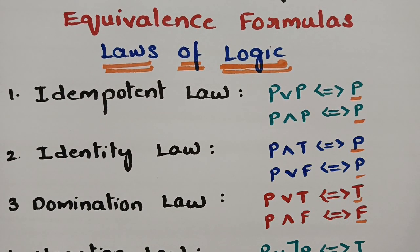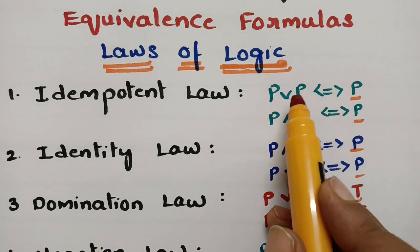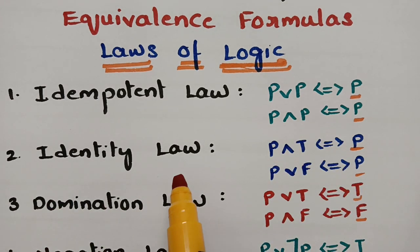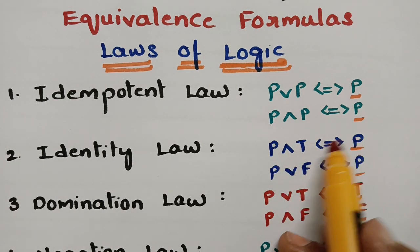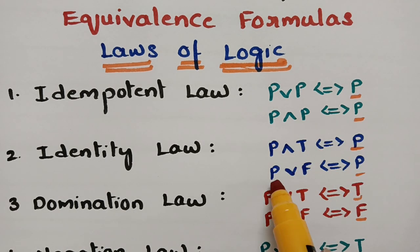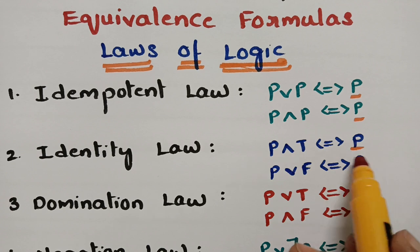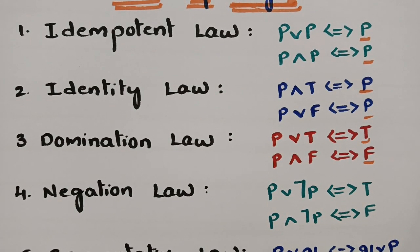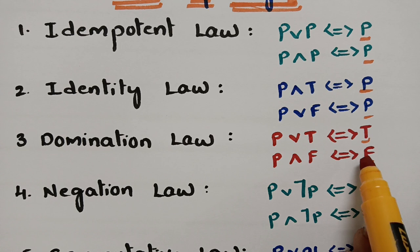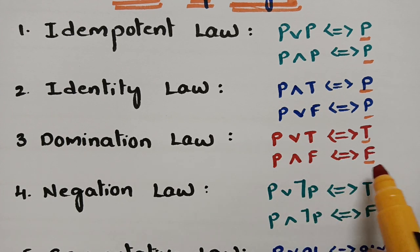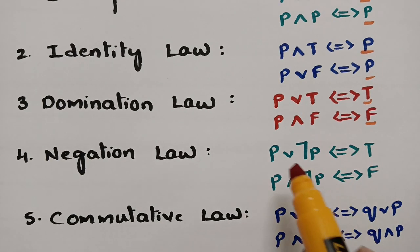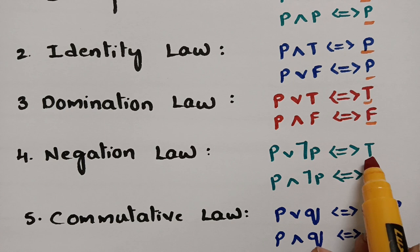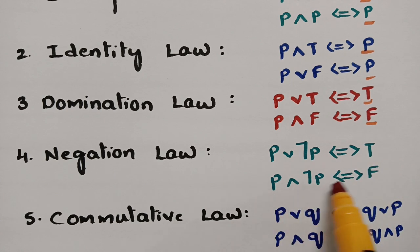So to recap: idempotent law — p squared equals p, whether disjunction or conjunction. Identity law — p AND true or p OR false equals p. Domination law — true and false are dominating: p OR true or p AND false gives true or false. Negation law — p OR negation p is true and p AND negation p is false.